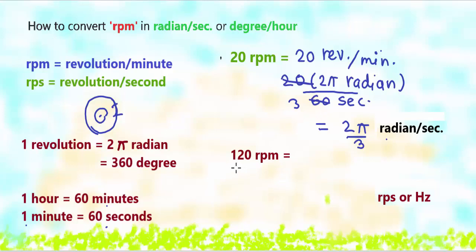Similarly, here we are converting 120 RPM into RPS or Hertz. RPS is revolution per second. 120 revolution per minute. We don't need to convert this revolution, we just need to convert minute into seconds. So 120 revolution as it is, and instead of minute, we will write 60 seconds here. 120 by 60 would be 2, so it will give us 2 revolution per second or 2 RPS.